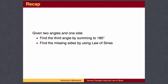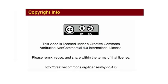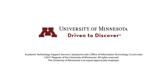To recap, given two angles and one side, we can first find the third angle because the three angles add to 180, then we can find the missing sides using the Law of Sines.